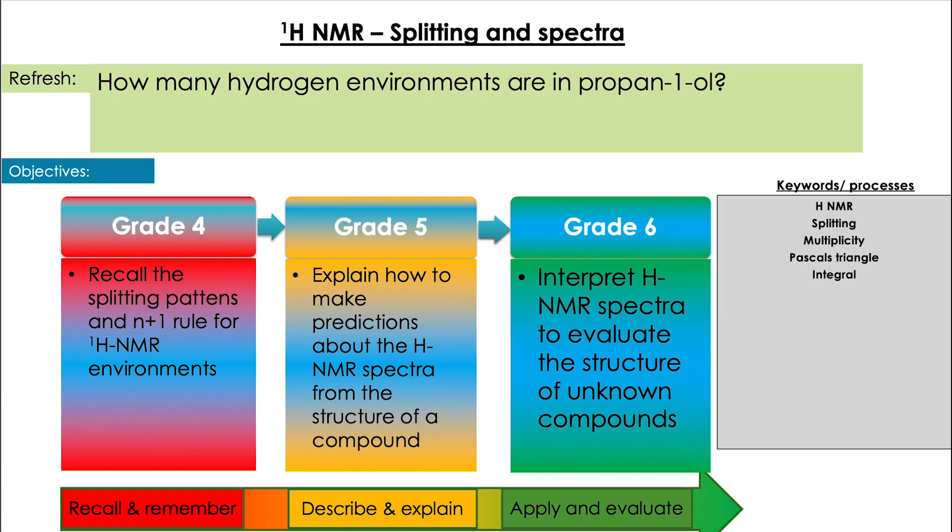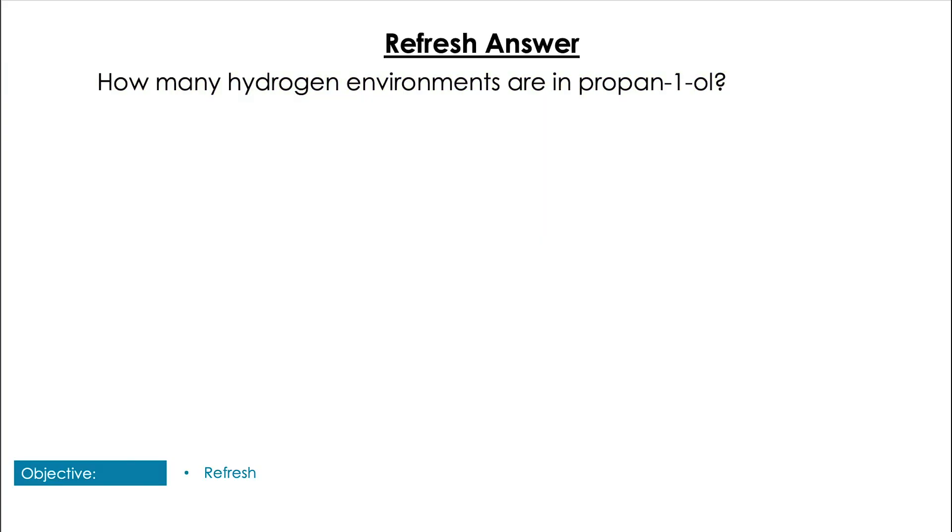Okay, well first things first, you'll need to draw propan-1-ol and we've got four different hydrogen environments: the CH3 group. Now remember the two CH2 groups are separate because they have different attachments if we follow our two bond rule, and the oxygen on the OH group, giving us four environments in total.